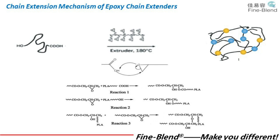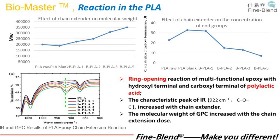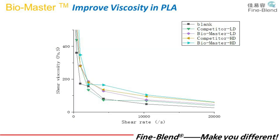PBS, PLA, and PBAT all have carboxyl-terminated groups and hydroxyl-terminated groups, which can react with epoxy groups. Therefore, three types of structures can be formed after the reaction: linear chain extension, branched chain extension, and cross-linking reaction. This is the infrared characteristic peak of PLA at about 922, and the characteristic peak increases with the increase of chain extender, proving that the chain extender added to PLA does react, and the molecular weight by GPC increases.